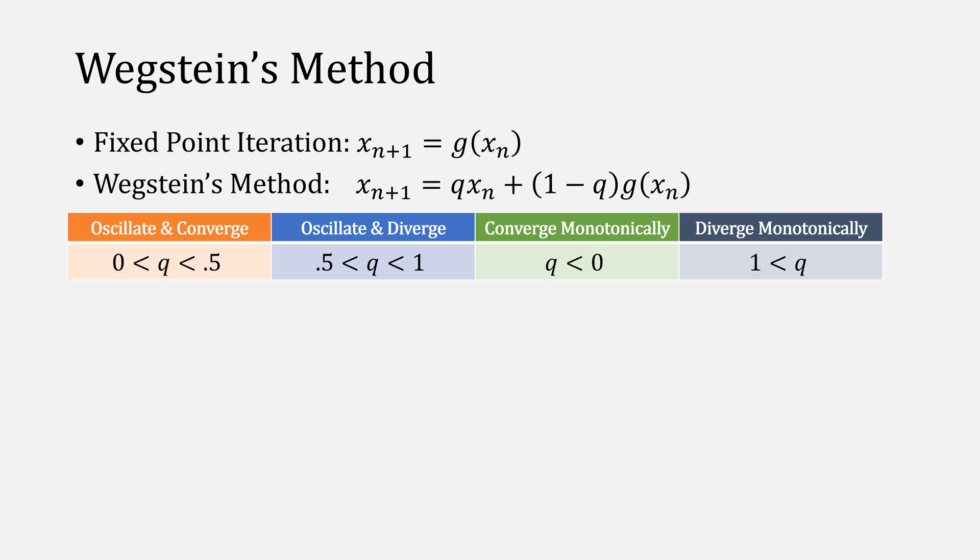Otherwise, we choose a value that's greater than 1. What this basically means is that when it is converging, we lean into the g of x and when it is diverging, we lean away from it.